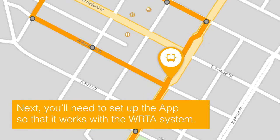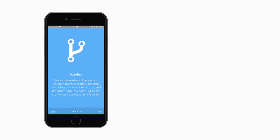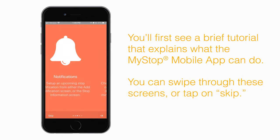Four, next you'll need to set up the app so that it works with the WRTA system. To do this, tap on the app's icon to open it. Five, you'll first see a brief tutorial that explains what the MyStop mobile app can do.